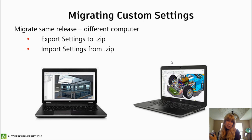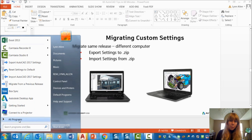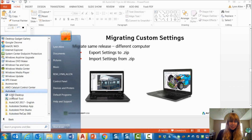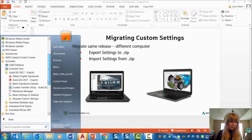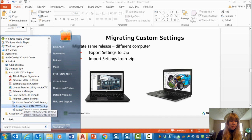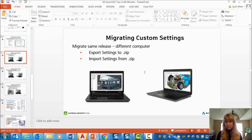And you're going to import those settings. Let me show you. We're going to go to the Start menu, go to All Programs, and then go to Autodesk. Underneath Autodesk, you will see AutoCAD — in my case 2017 — and then we're going to go to Migrate Custom Settings. Old computer: export out to a zip file. New computer: import in. That's pretty simple, pretty straightforward. That's how you move from one computer to another, same release.